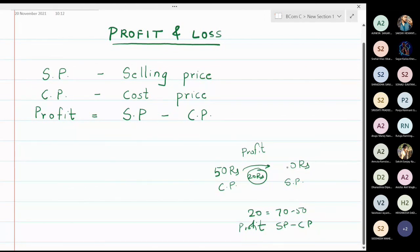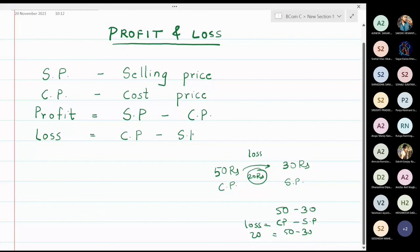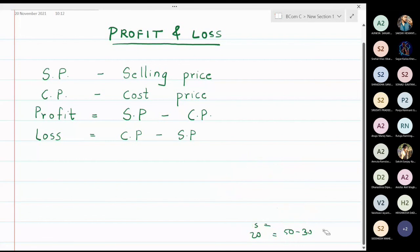If the person sells the same article at 30 rupees instead of 50 rupees, the shopkeeper is going to bear a loss. That loss is 50 minus 30, which is 20 rupees. Here 50 is the cost price and 30 is the selling price. So the formula of loss is: loss equals cost price minus selling price.